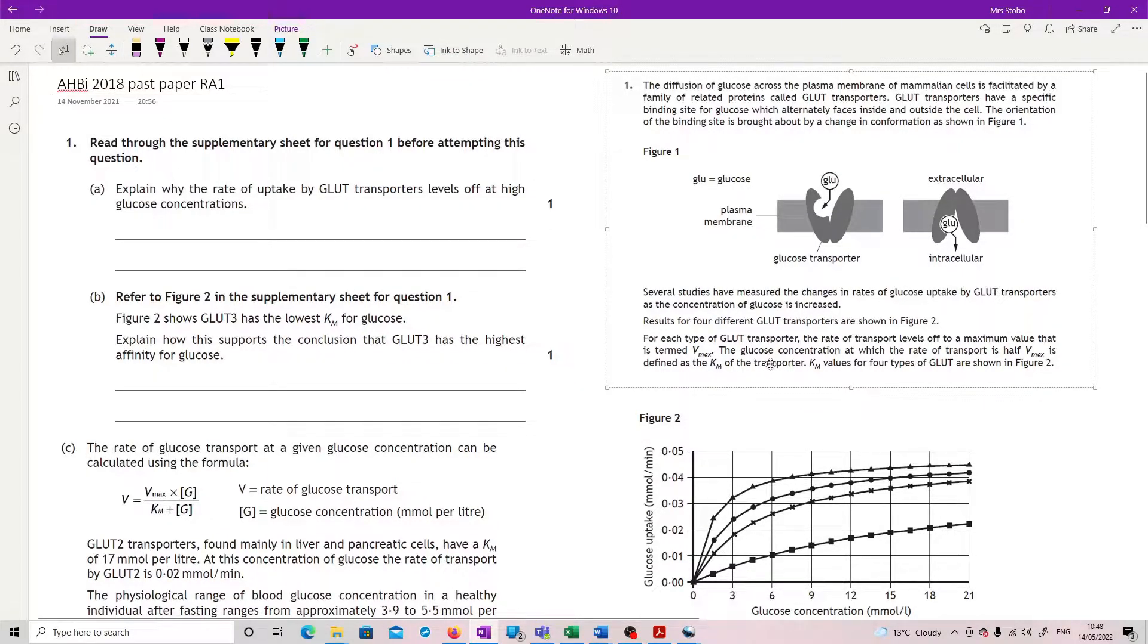Results of four different GLUT transporters are shown in Figure 2. For each type of GLUT transporter, the rate of transport levels off at a maximum value that is termed Vmax. The glucose concentration at which the rate of transport is half Vmax is determined as the Km of the transporter. Km values for four types of GLUT are shown in Figure 2.